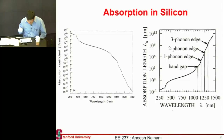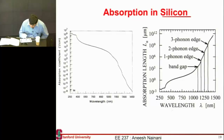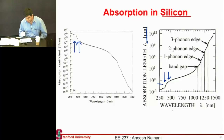This is the absorption coefficient for silicon. Silicon, as you might know, is not the best material for absorbing light. Looking at the absorption coefficient over different wavelengths: the blue photons have a very high absorption coefficient, and if I look at the absorption length plotted in microns, they are getting absorbed within the first few hundred nanometers of my device.